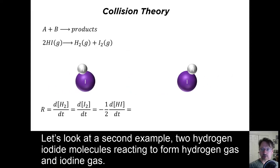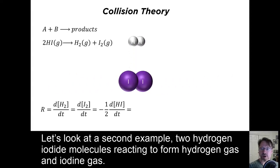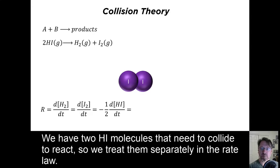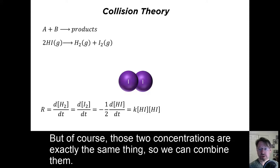Let's look at a second example. Two hydrogen iodide molecules reacting to form hydrogen gas and iodine gas. The same argument about the rate law applies. We have two HI molecules that need to collide to react, so we treat them separately in the rate law. But of course, those two concentrations are exactly the same thing, so we can combine them.